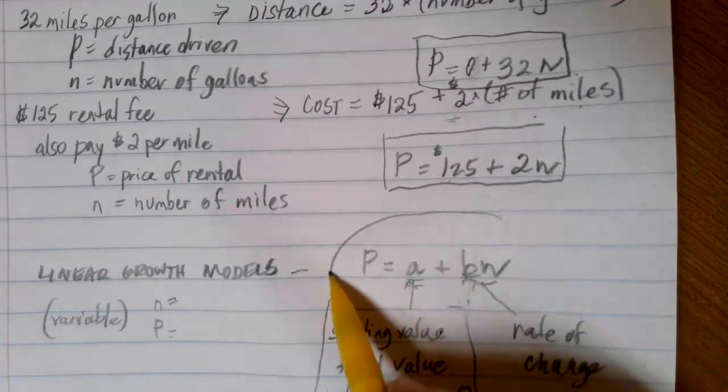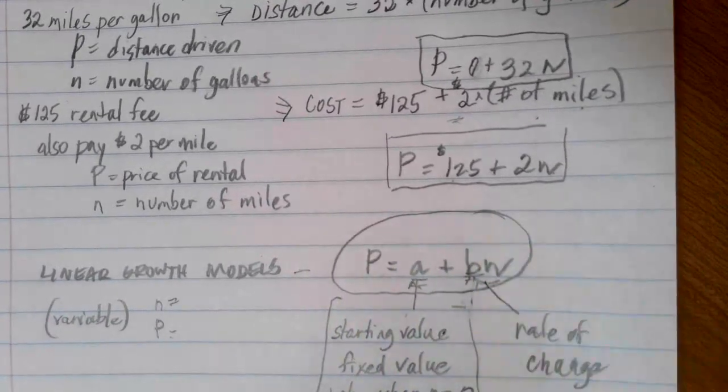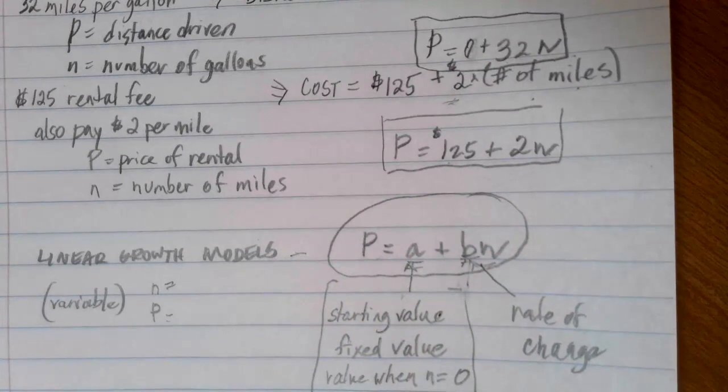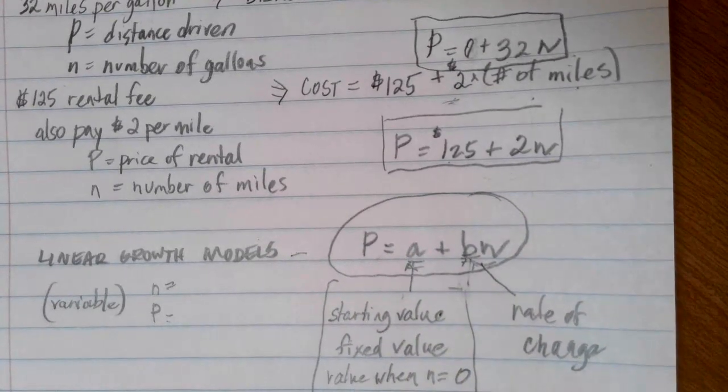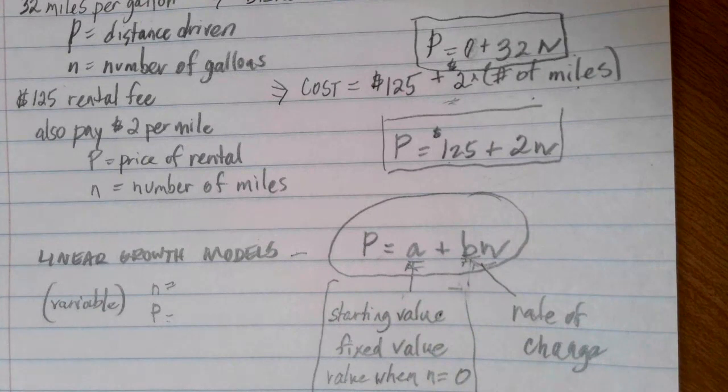So this is our linear growth model general equation. And once you have an equation that you can write like this, then all of a sudden you can use it to make all sorts of plans and predictions for things that are going on. And we'll look at that in our next video.